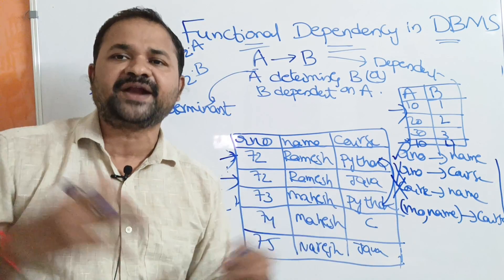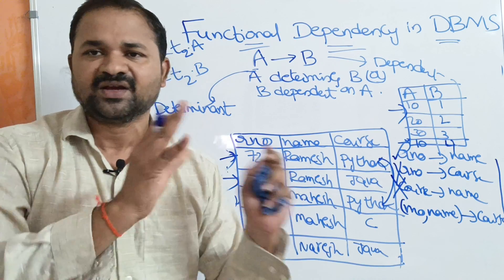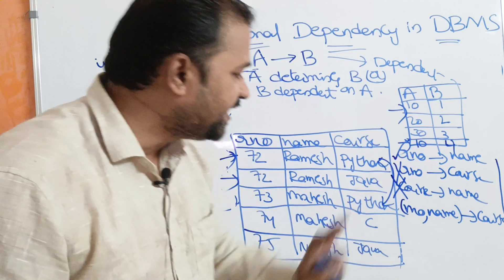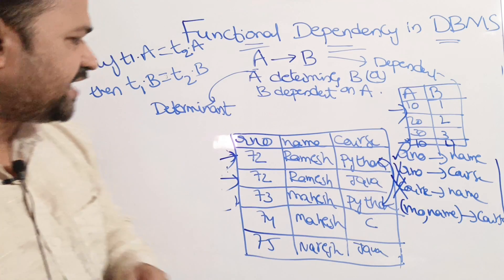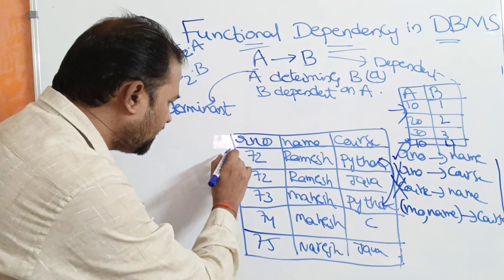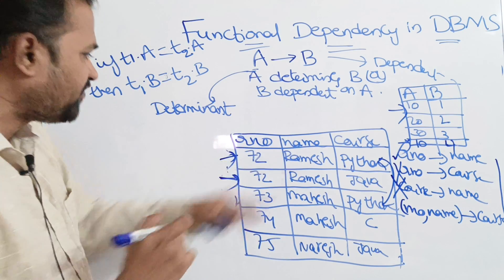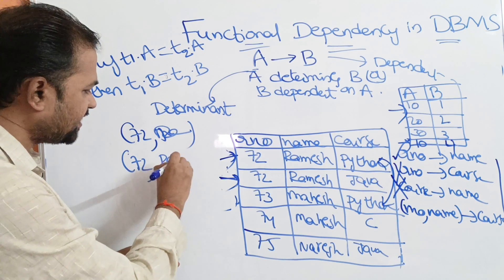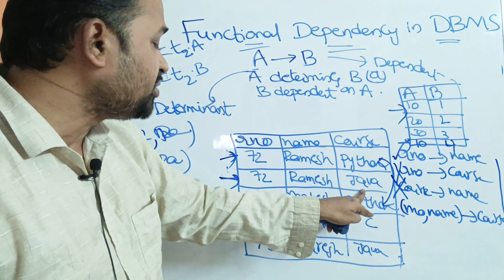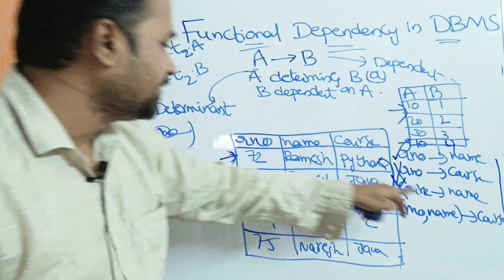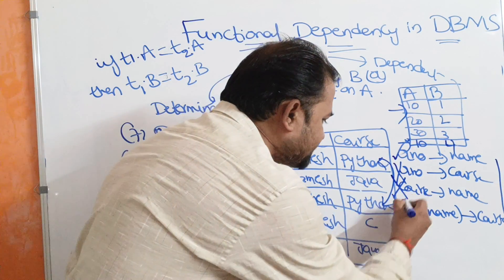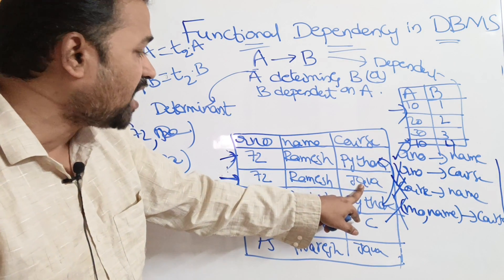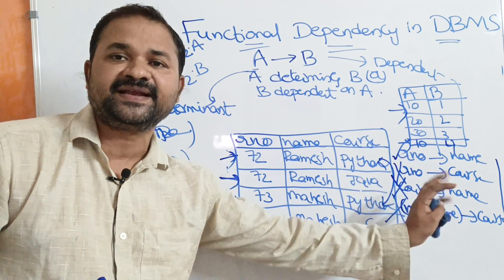On the left-hand side we can have more attributes, and on the right-hand side as well. For example, taking two attributes on the left: roll number and name determines course. Considering two rows where the first has roll number 72 and name Ramesh, and the second has roll number 72 and name Mahesh — T1.course is Python and T2.course is Java. They are not equal, so this functional dependency is wrong. However, if Java were replaced with Python, the courses would be equal and the dependency would be correct.